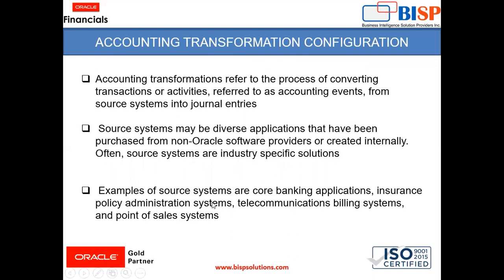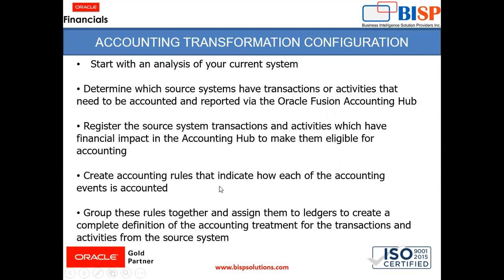Examples of source systems include core banking applications, insurance policy administration systems, telecommunication billing systems, and point-of-sale systems. The steps to follow in accounting transformation configuration start with analyzing the current system, then determining which source systems have transactions or activities that need to be accounted and reported via Oracle Fusion Accounting Hub.